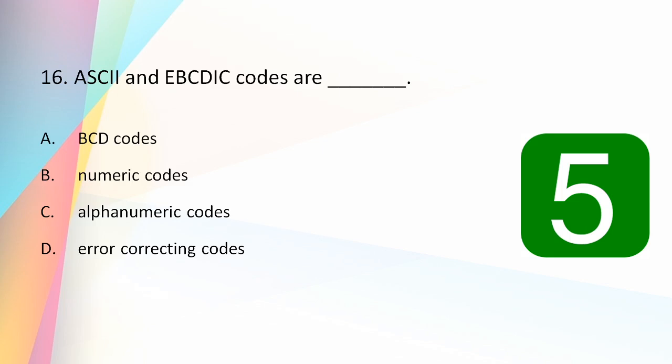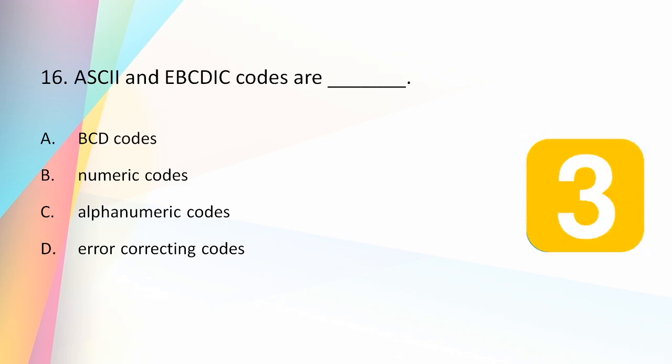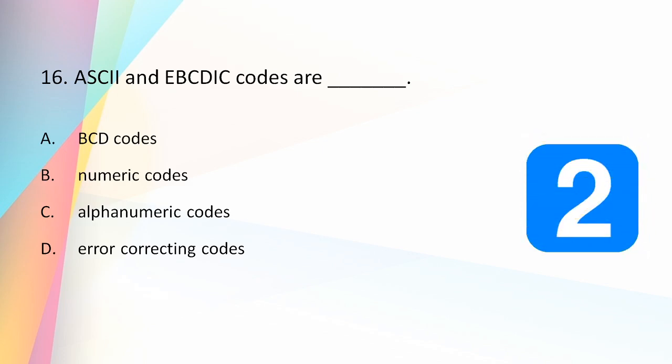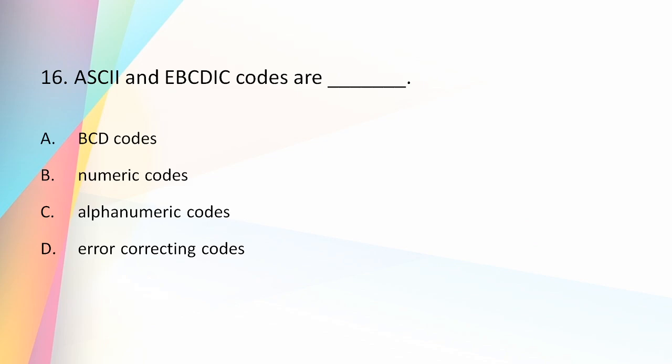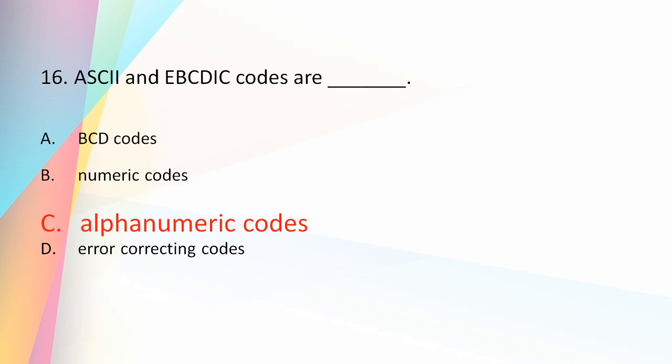ASCII and EBCDIC codes are: BCD codes, numeric codes, alphanumeric codes, or error correcting codes? The answer is alphanumeric codes. ASCII and EBCDIC are alphanumeric codes, sometimes called character codes due to their certain properties, and they are basically binary codes.